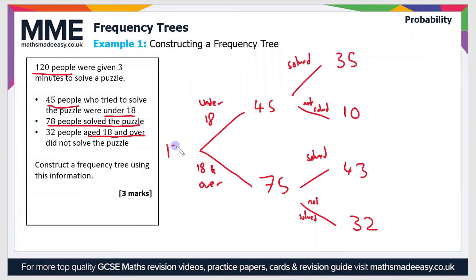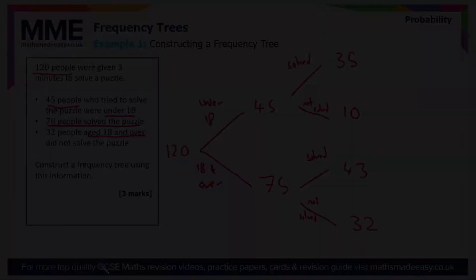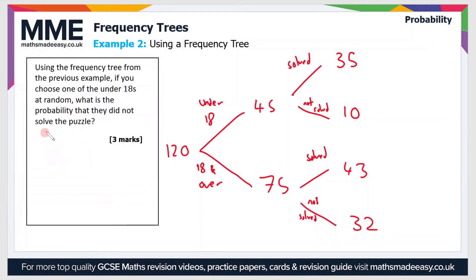And the other is that there's 120 people in total, so we can put 120 at the start of the tree diagram as well. So moving on to the second part then, using the frequency tree from the previous example, if you choose one of the under 18s at random, what is the probability that they did not solve the puzzle?